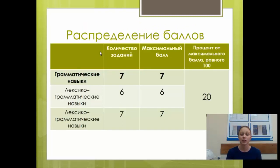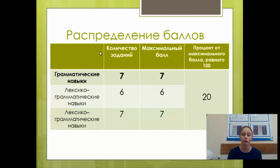Распределение баллов: за раздел 3 вы можете получить 20 баллов. Грамматические навыки содержат 7 заданий — максимальный балл 7. Лексико-грамматические навыки на словообразование — 6 заданий, 6 баллов. Лексические знания — 7 заданий, 7 баллов. При максимальном балле 100 (учитывая и устную, и письменную часть) за грамматический раздел вы можете получить 20% — это очень важная часть на экзамене.